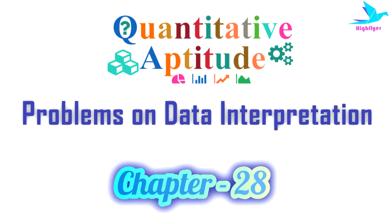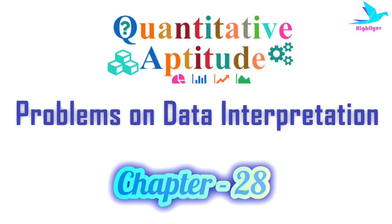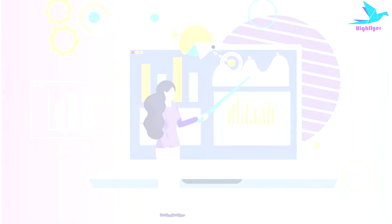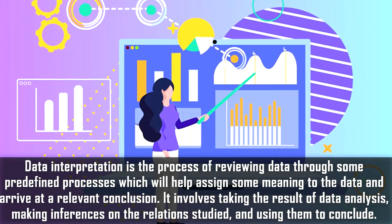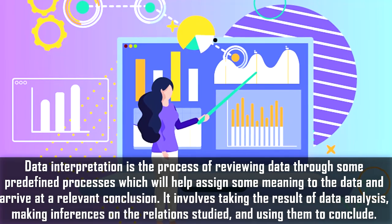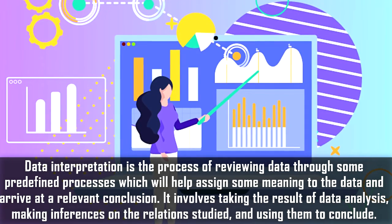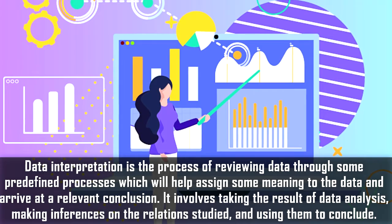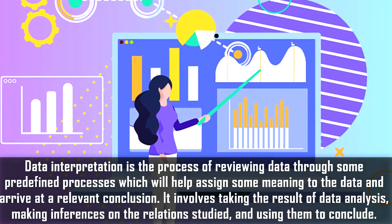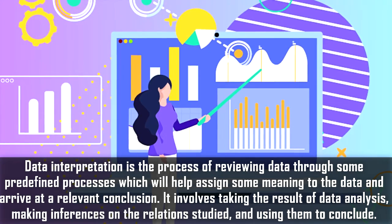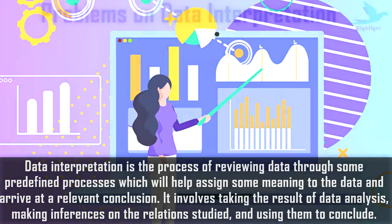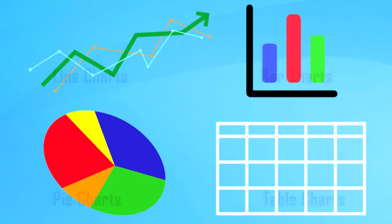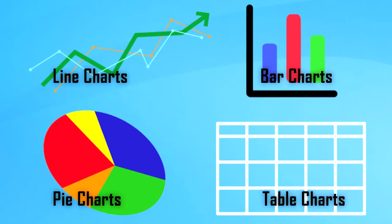Data interpretation is our next chapter for quantitative aptitude. It is the process of reviewing data through predefined processes which help assign meaning to the data and arrive at a relevant conclusion. It involves taking the results of data analysis, making inferences on the relations studied, and using them to conclude.